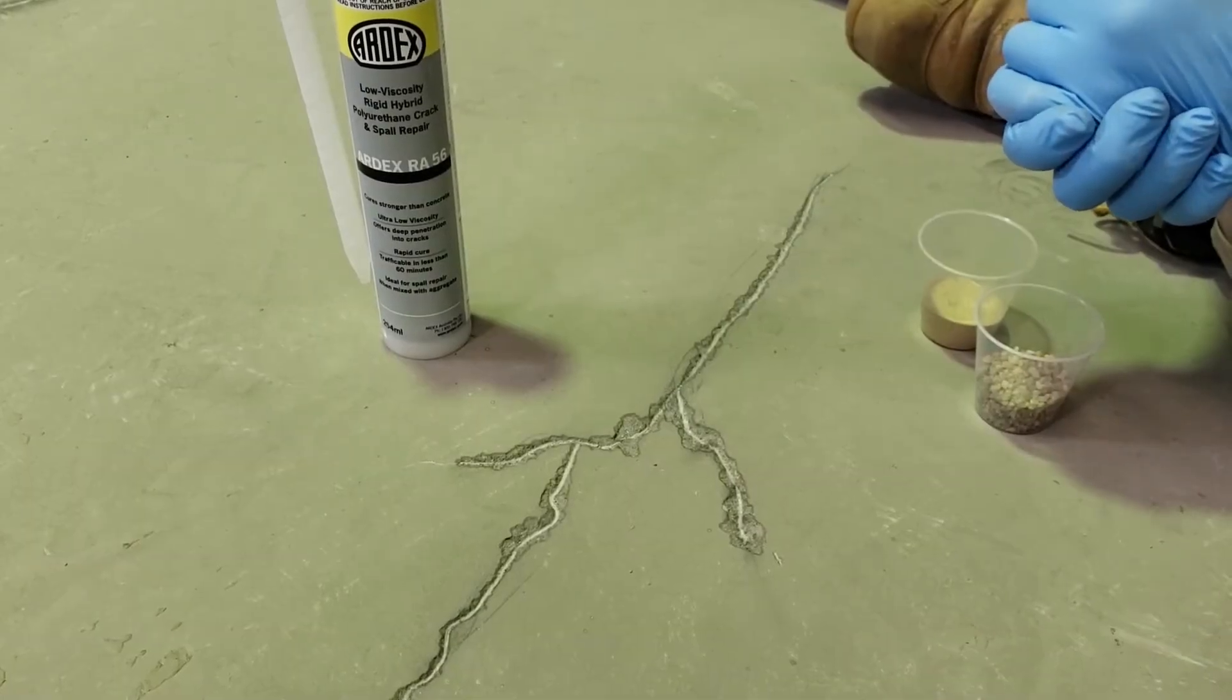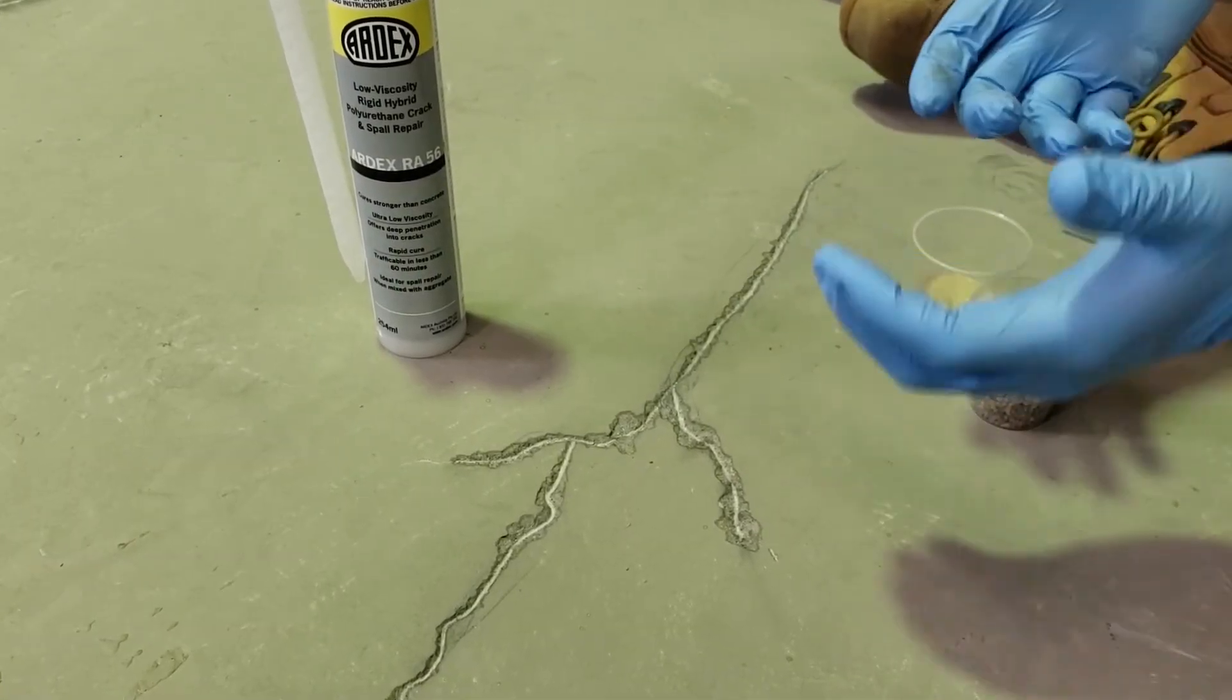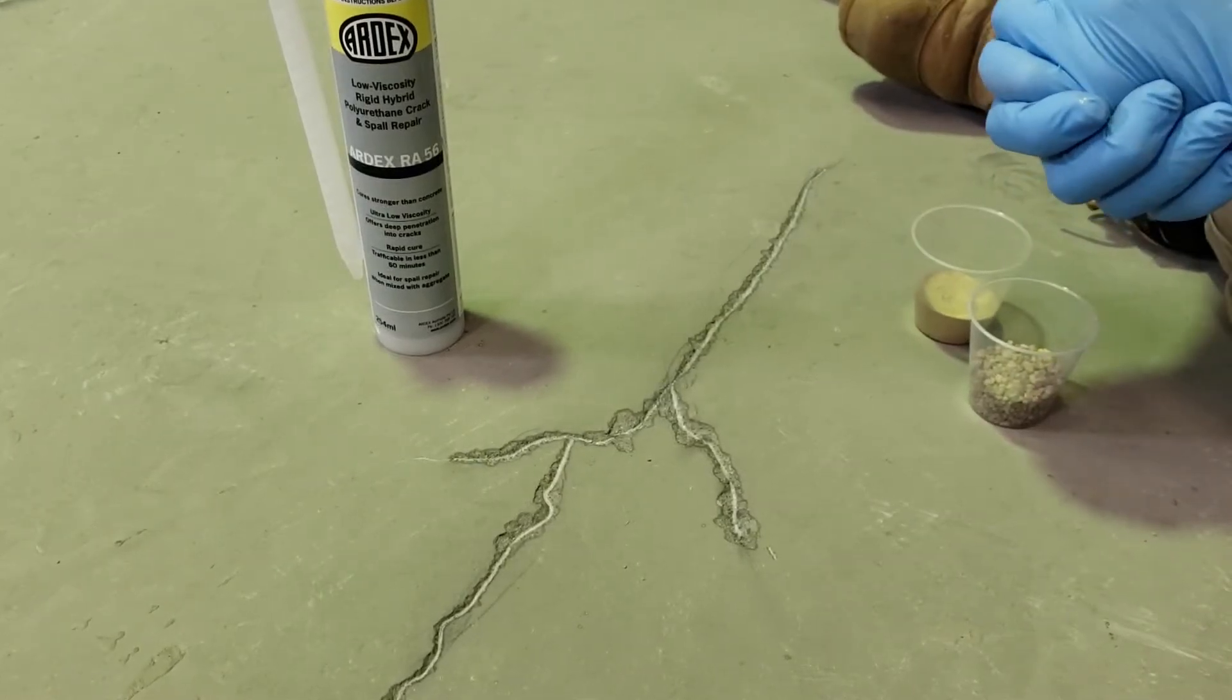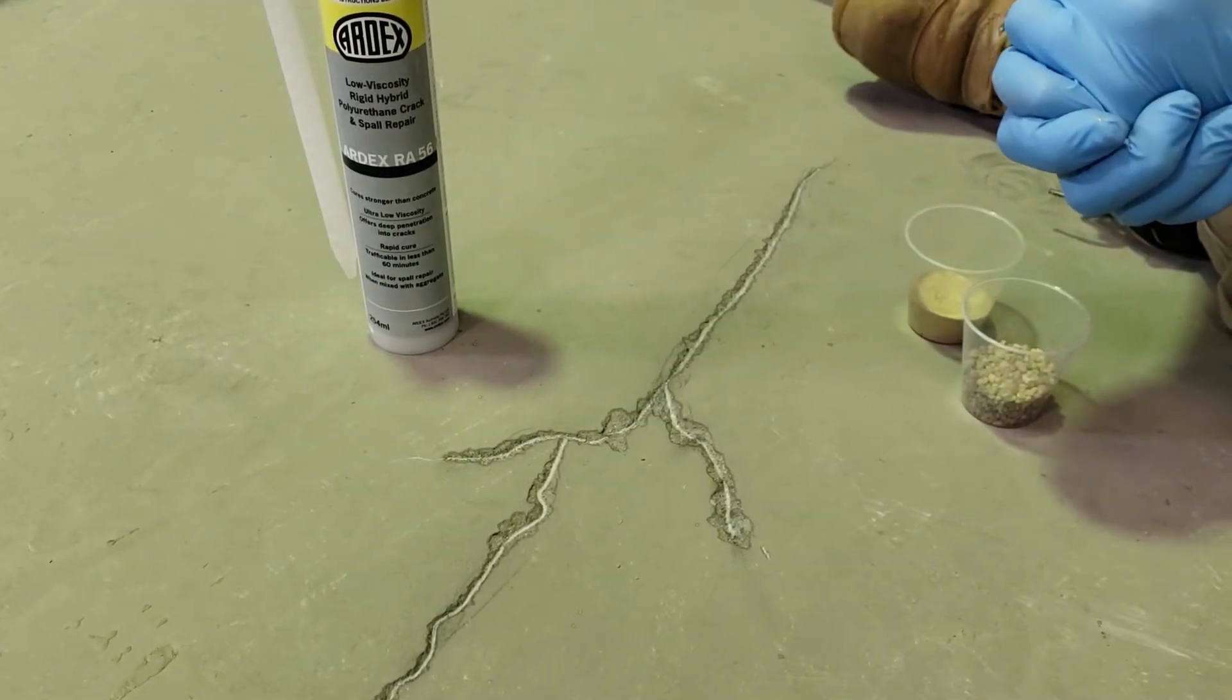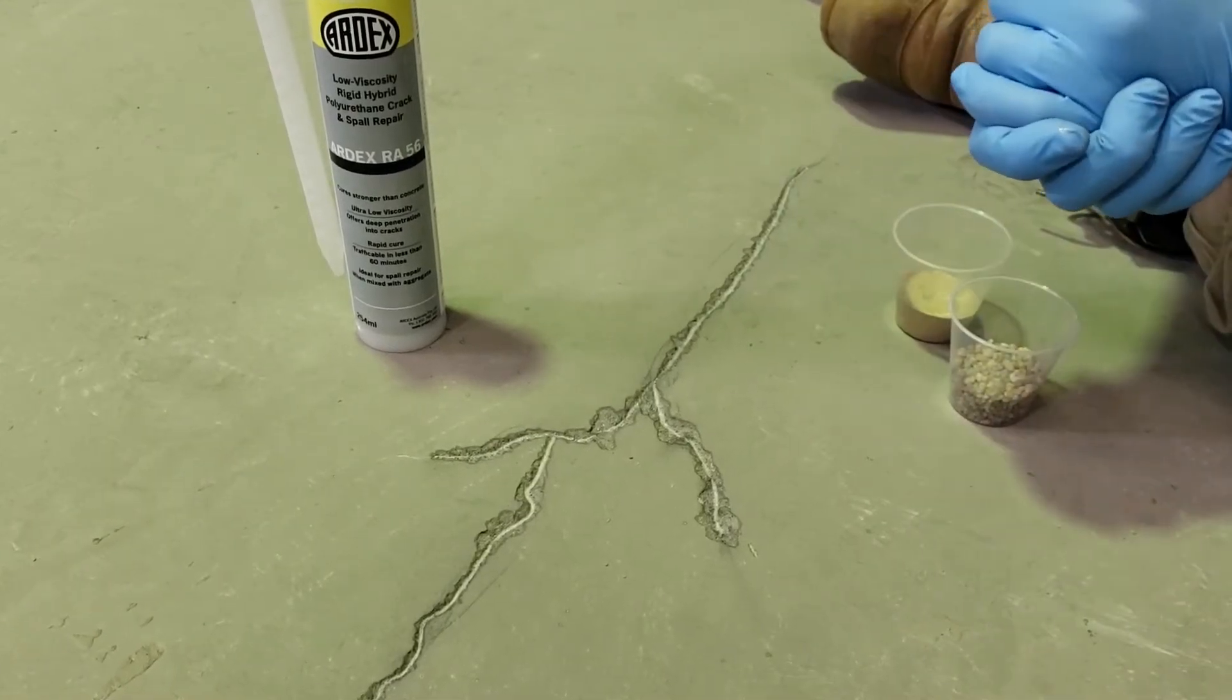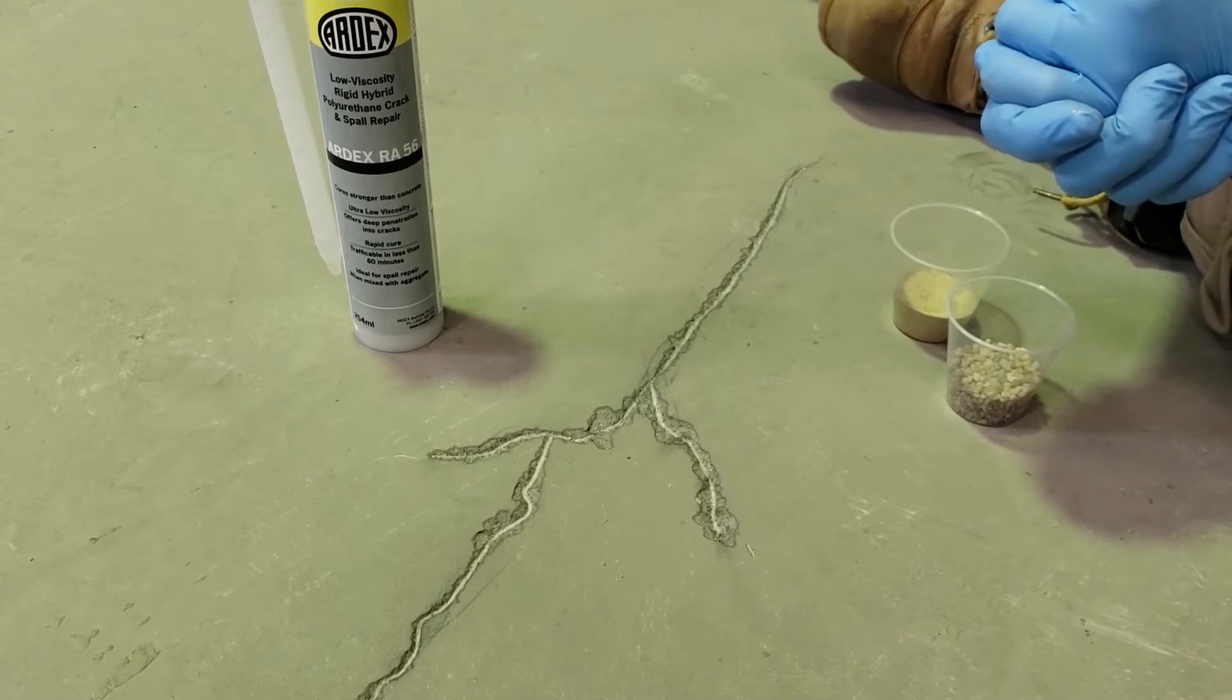This product I'm going to be talking to you about today is what's known as our RA-56. RA-56 is specifically designed to infill hairline cracking on a floor. Given that it's really low viscosity, the best way I can describe it is it's like water, really, really flowable.